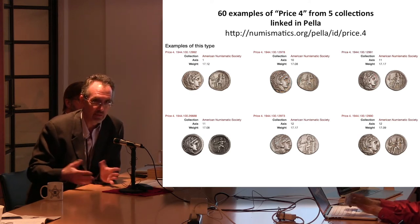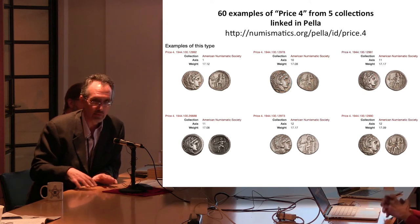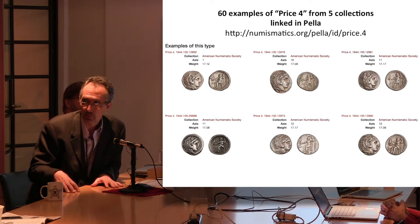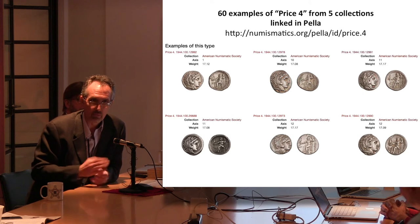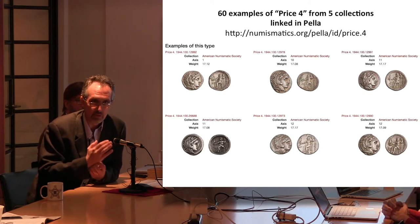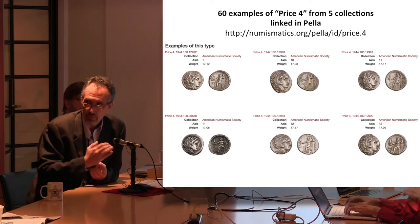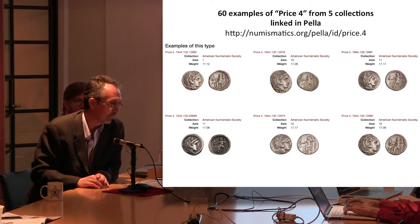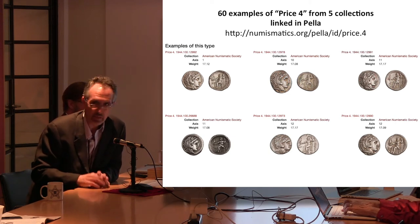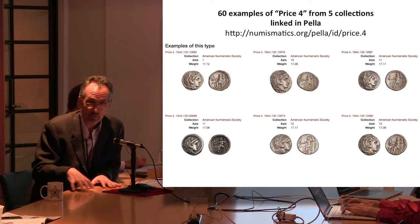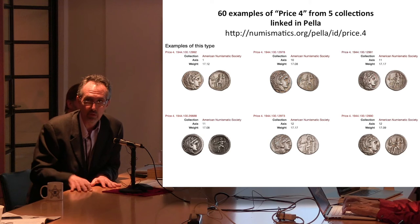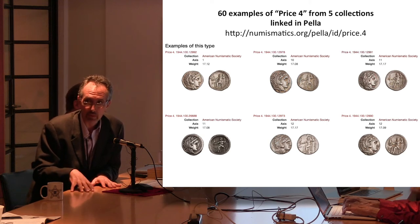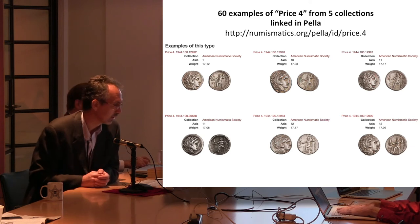Part of the problem is trying to come up with a numbering system that is infinitely expandable but also stable enough to refer to without that number falling off every couple of years. We're trying to work out how best to number this material. This is a problem not only for Pella but also for OCRE and for Seleucid Coins Online, Ptolemy coins, and so forth. Then another question: you're cataloging public collections in museums and universities — what about private collections?